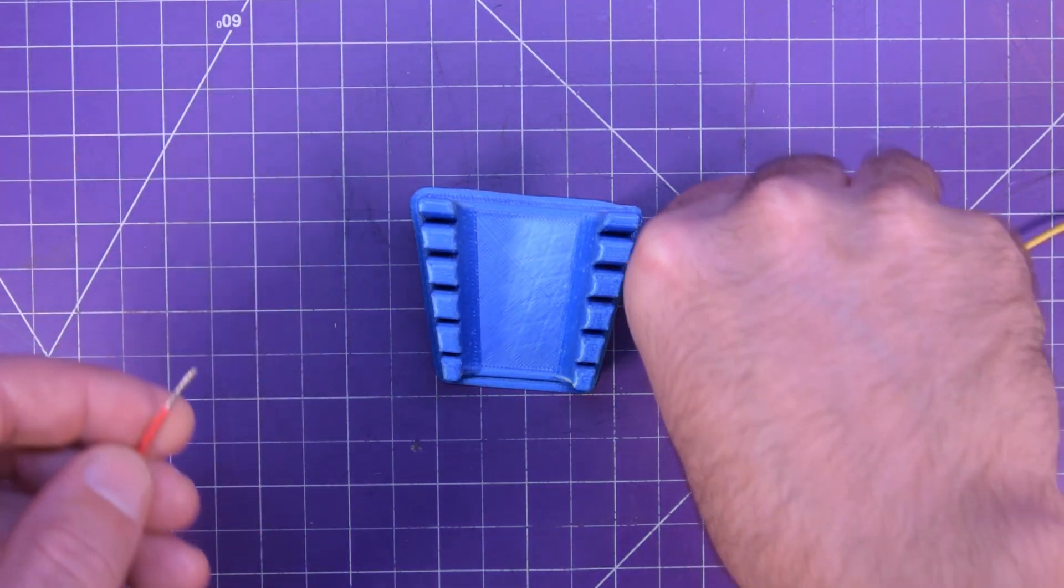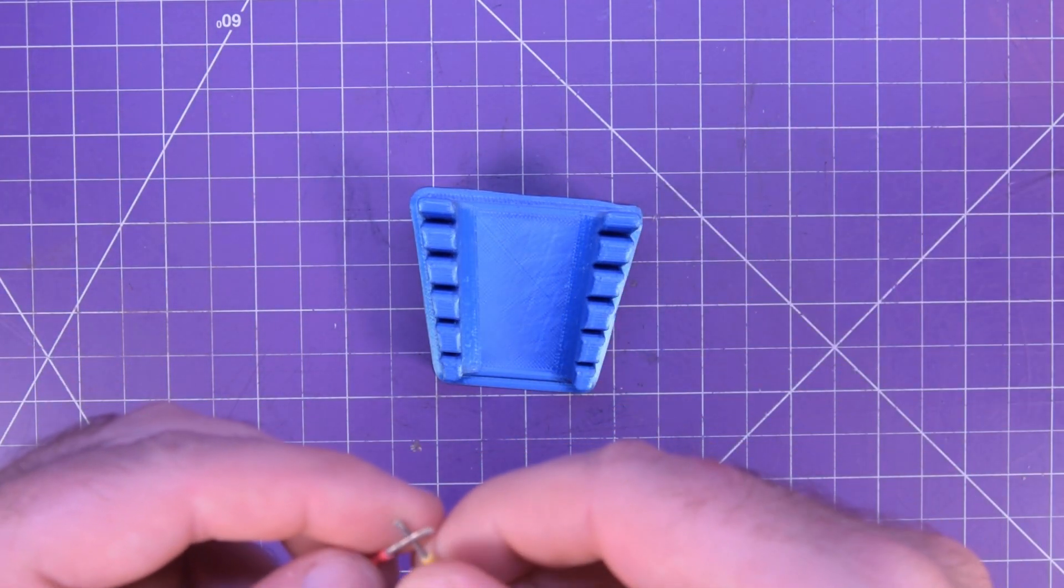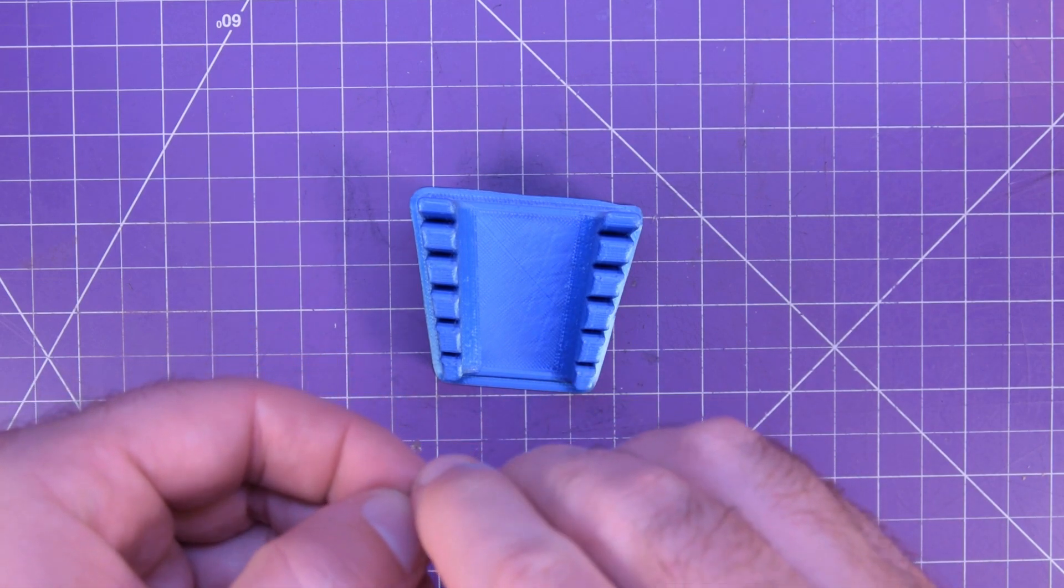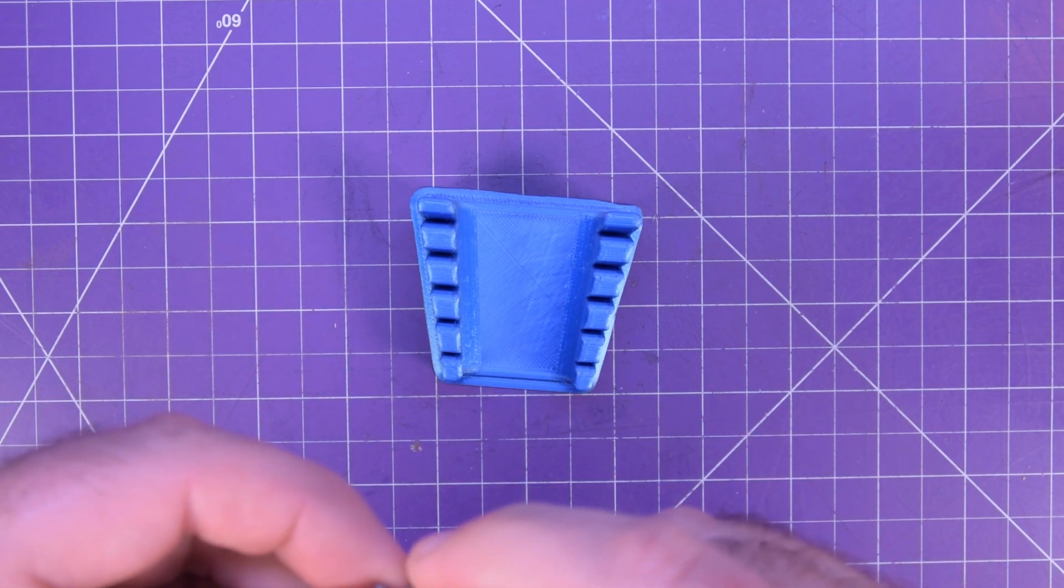So first things first, usually you want to get some good mechanical strength on your solder joints, so I like to twist my wires together.